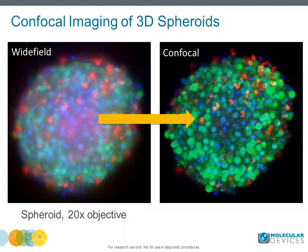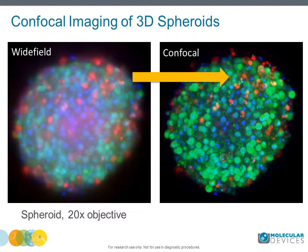Another challenge in performing a spheroid assay is the ability to image and analyze 3D objects. Common issues include difficulty of light penetration into spheroids, scattering of light by cells, and background from out-of-plane fluorescence, which makes images blurry. Confocal microscopy provides efficient background rejection and gives sharper images.